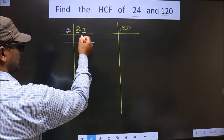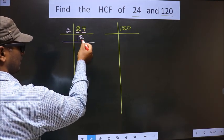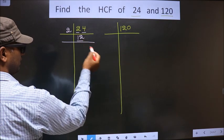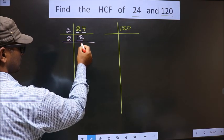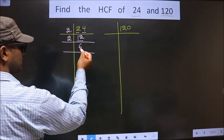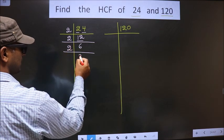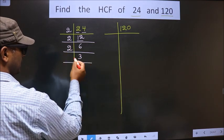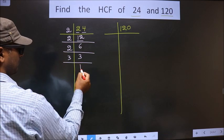Now here we have 12. 12 is nothing but 2 times 6 is 12. Now 6 is nothing but 2 times 3 is 6. Now 3 is a prime number, so we take 3 times 1 is 3.